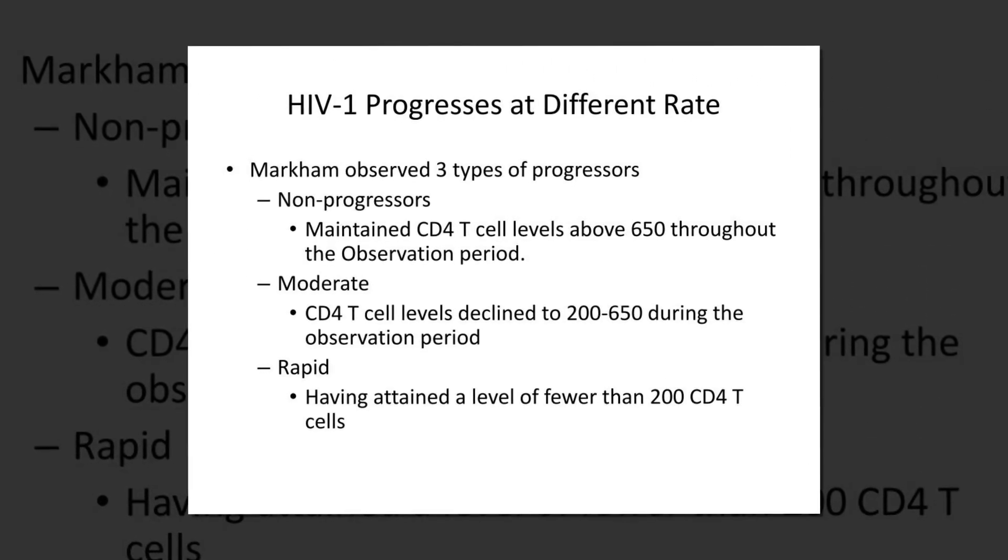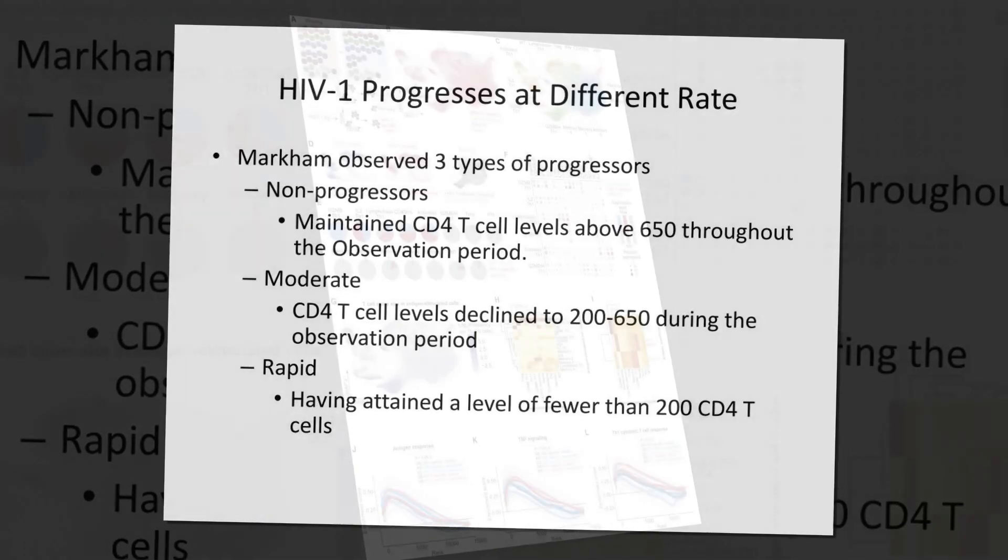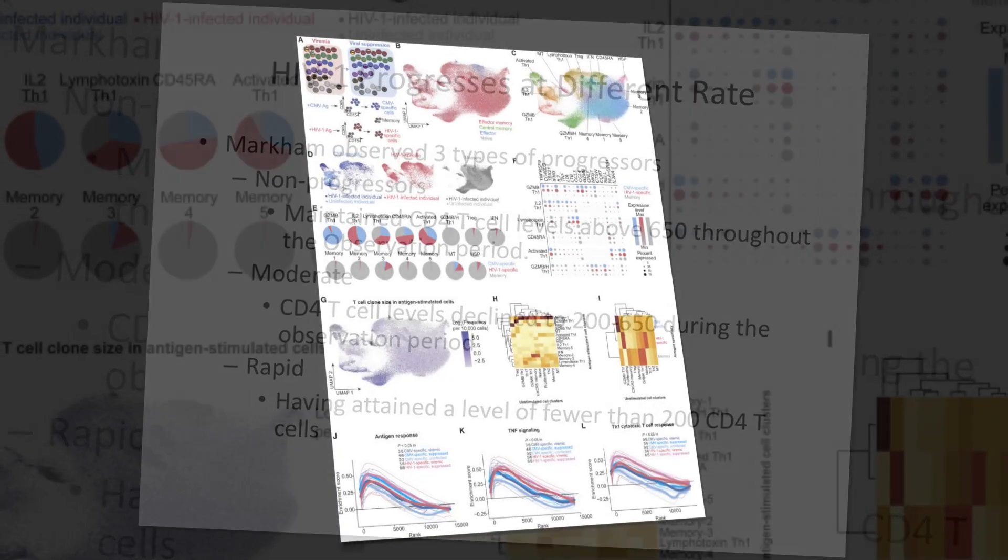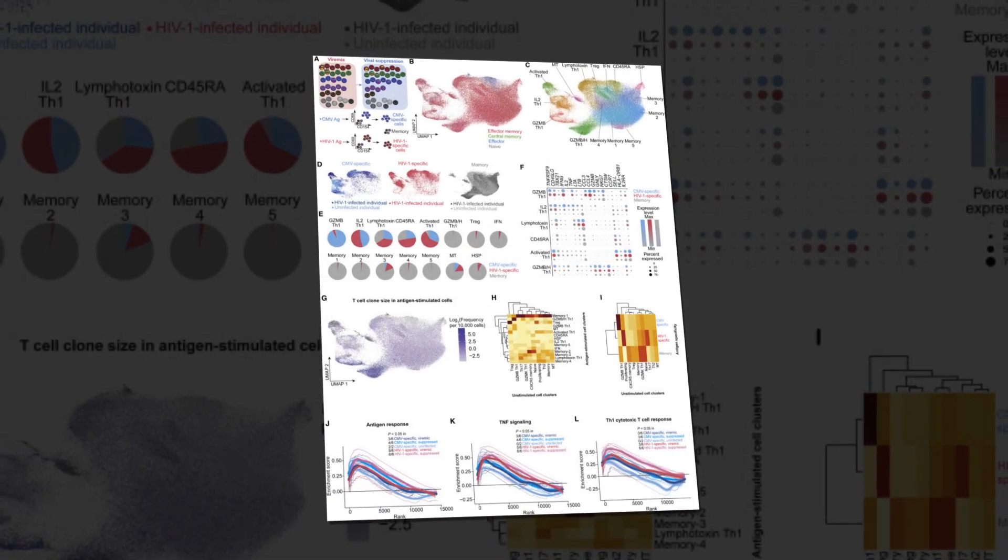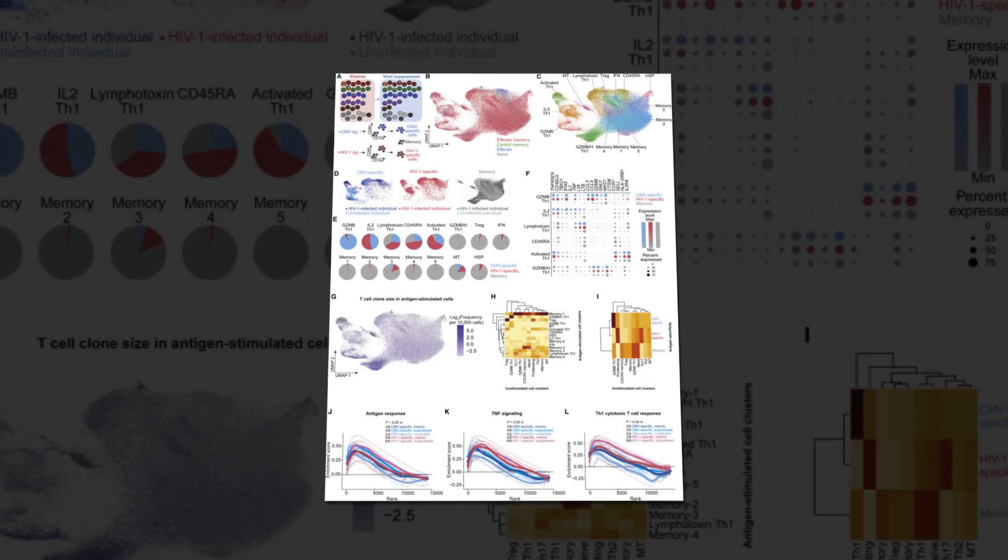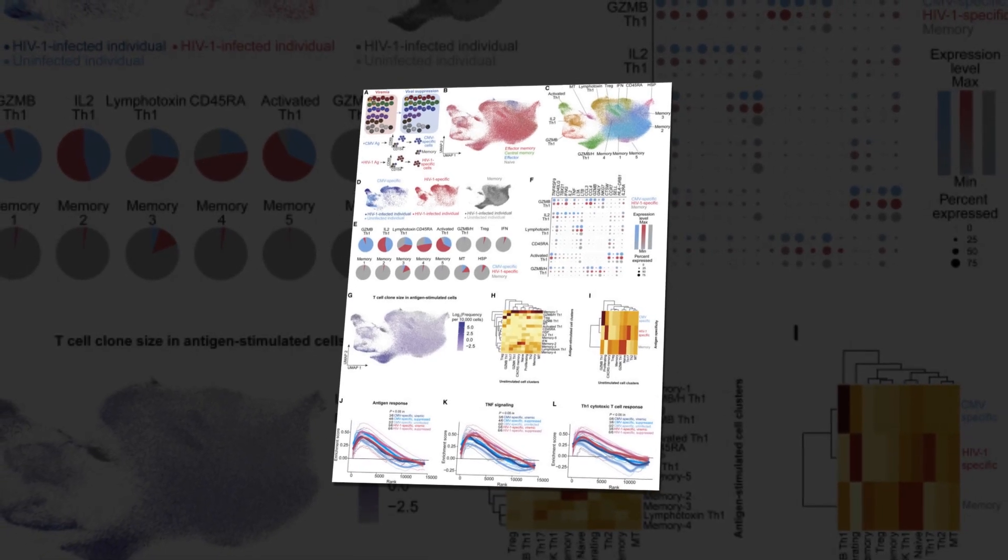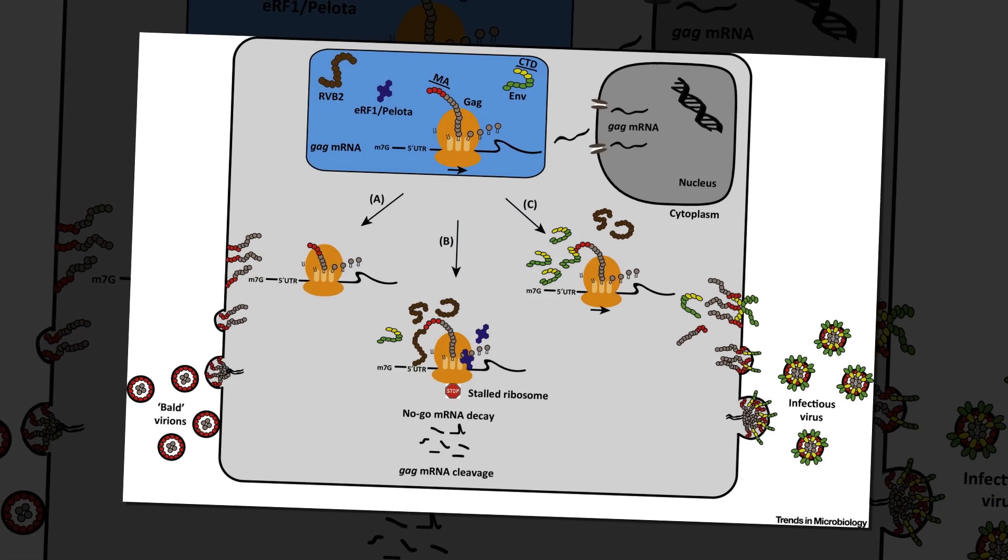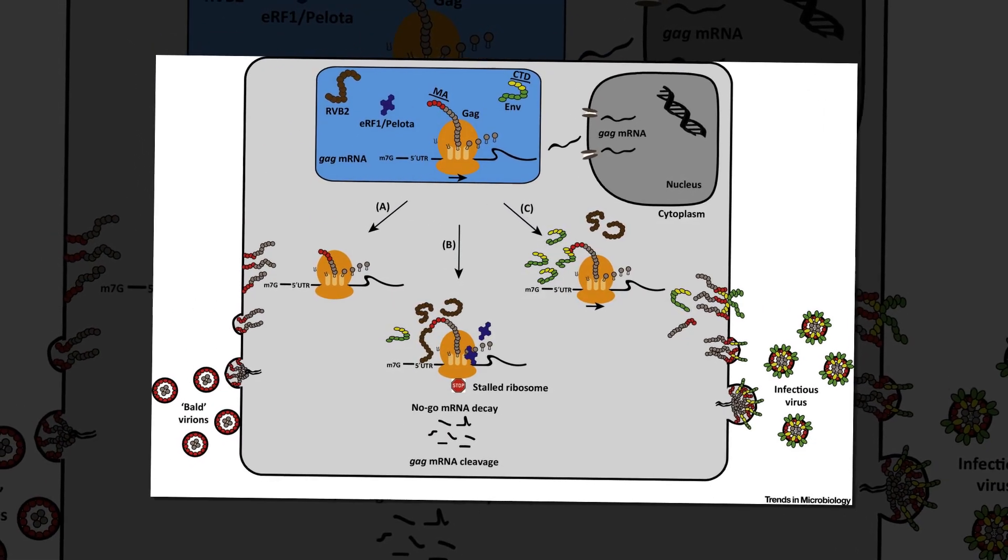Before initiating ART, VNPs showed significantly lower total and intact HIV-1 DNA levels in their peripheral blood mononuclear cells, PBMCs, and various CD4 T-cell subsets. This suggests partial protection against HIV infection at the cellular level.